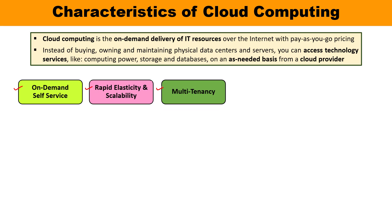The third property is multi-tenancy. Multi-tenancy can be defined as a software architecture that enables a single program instance to provide services to multiple end users. This feature enables the usage of the same computing resources by multiple customers. Multiple clients share the same computing resources, and yet in that situation the cloud customers' data is kept completely separate and safe.